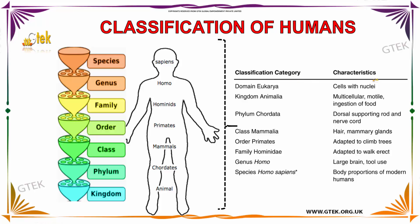Here you can see the classification category and characteristics. In category: domain Eucarya is for cells with nuclei; kingdom Animalia is for multicellular organisms; phylum Chordata is for dorsal supporting rod and nerve cord; class Mammalia is for hair and mammary glands; order primates is adapted to climb trees; family Hominidae is adapted to walk erect; genus Homo is large brain, tool use; and species Homo sapiens has the body proportions of modern humans.